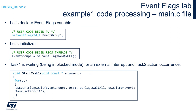After those operations, please build the project, start the debug session, open the SWV ITM console, and run the application. As a result, we should see '1' displayed on the console once every 3 seconds — that would be a Task2 action — combined with a button press which triggers the external interrupt action.